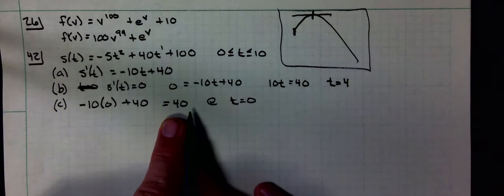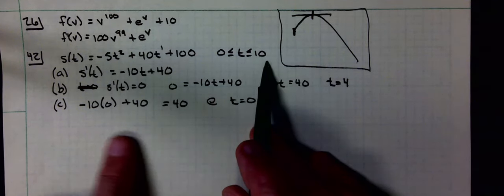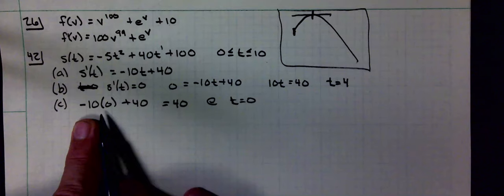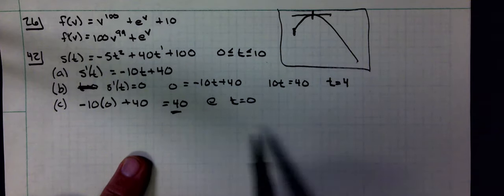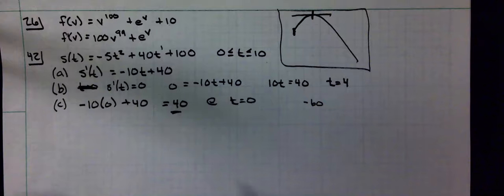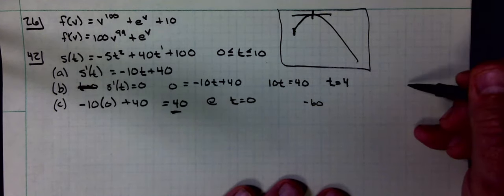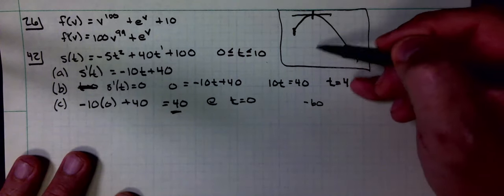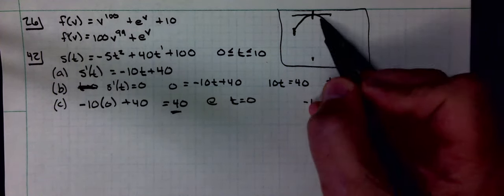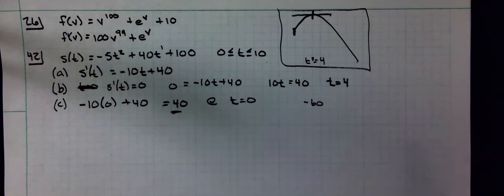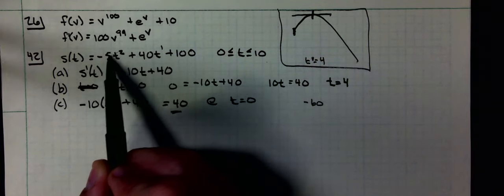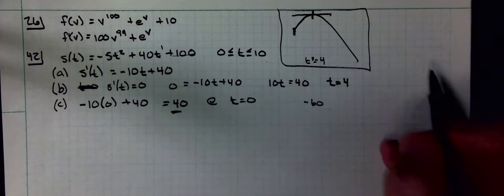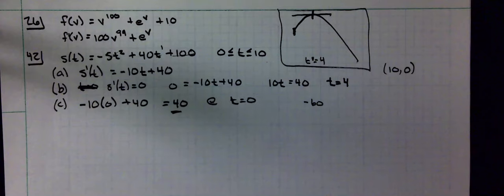It says graph on a separate page the position and instantaneous velocity. I gave you part of this graph. When t is 10, I'm going to have negative 60 for my velocity. You're going to have to start out at 40 and go down to negative 60. That is going to be a linear function. The peak is at t equals 4. If you put a 10 into the original function, you're going to get zero. The parabola goes through 10 comma zero. That should be enough for you to graph that problem.